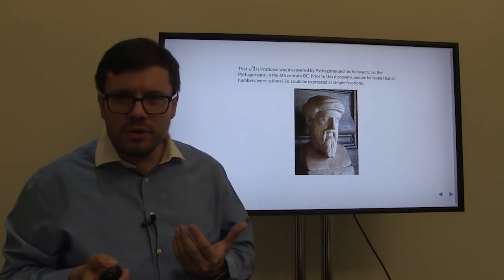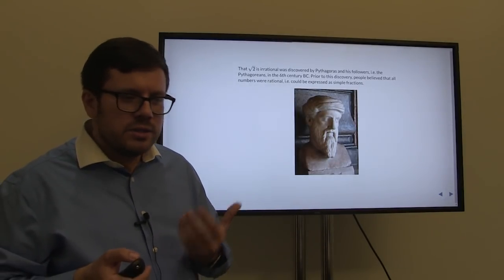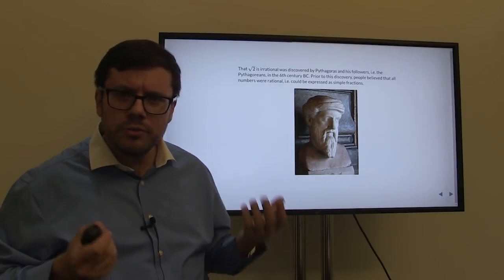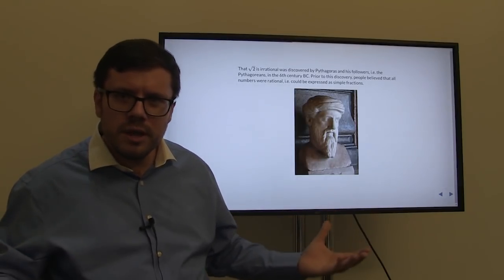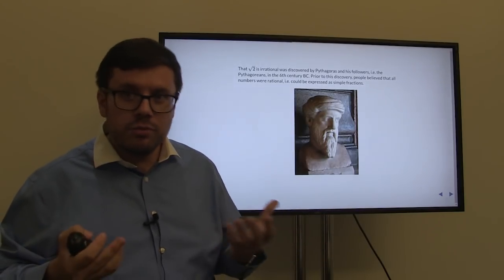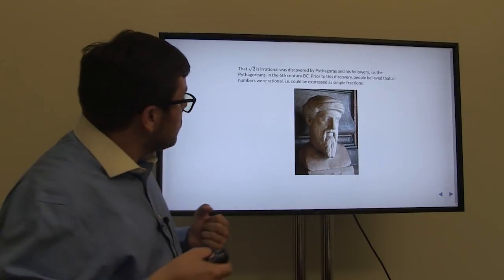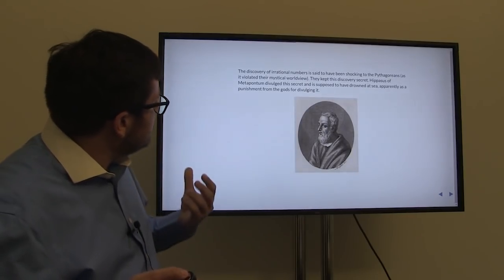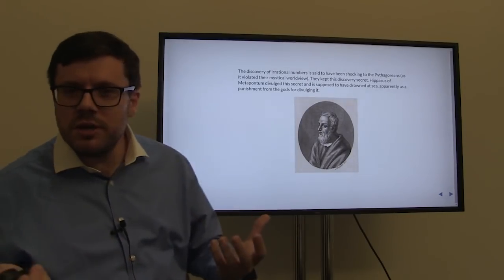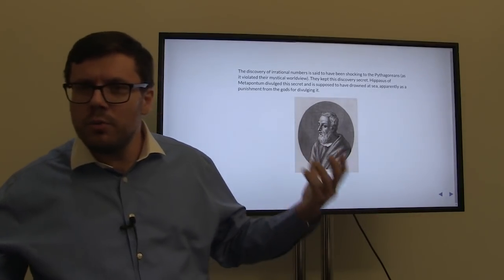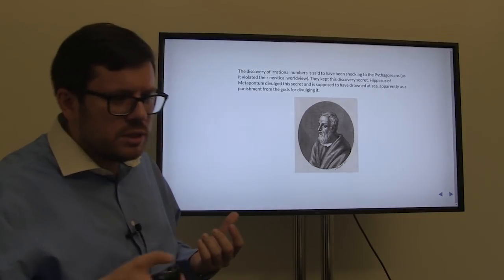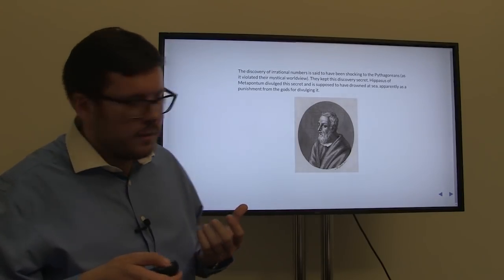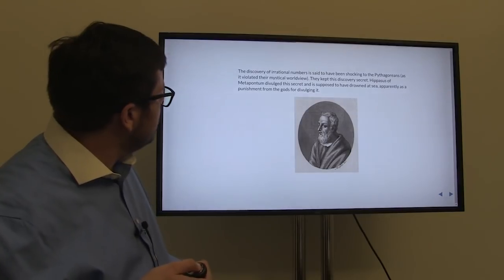That the square root of 2 is irrational was discovered by Pythagoras. Since Pythagoreans were actually mystics, the discovery of irrational numbers is said to have dealt a huge blow to their worldview. They initially thought that every number could be written as p over q. It is even rumored that Hippasus of Metapontum, who divulged the secret that there exists this weird number √2 which cannot be written as a fraction, drowned at sea as punishment from the gods for divulging this hideous secret.